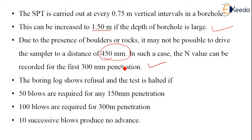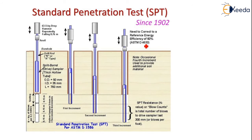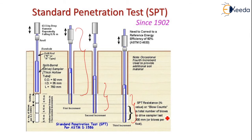The boring log shows refusal and the test is halted if 50 blows are required for every 150 mm penetration, 100 blows are required for 300 mm penetration, or 10 successive blows produce no advancement. This is how the standard penetration test looks: there is a first increment, a second increment, and a third increment, where you get the SPT resistance N-value, which is the blow count — the total number of blows to drive the sampler at least 300 mm, or blows per foot.